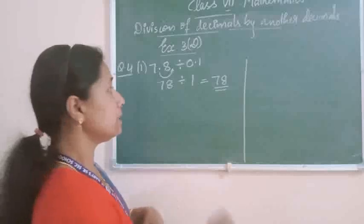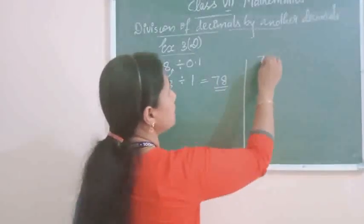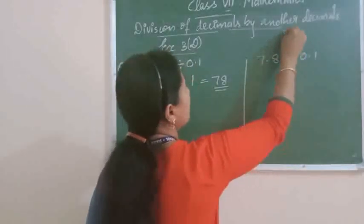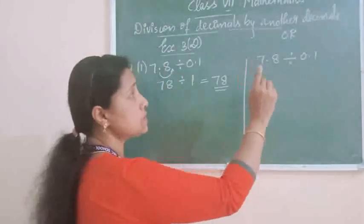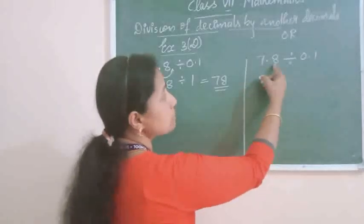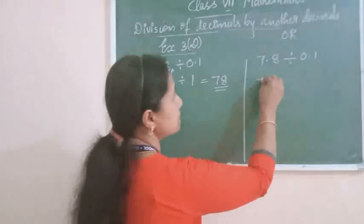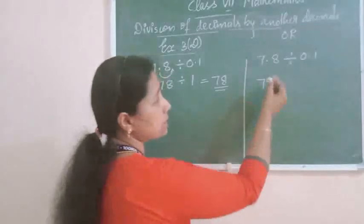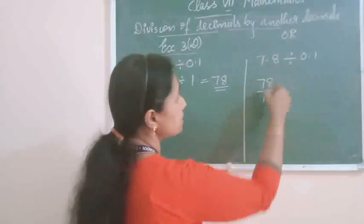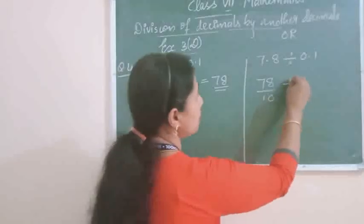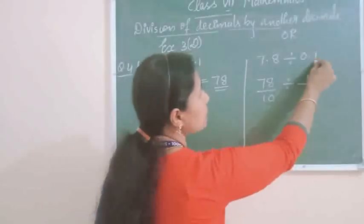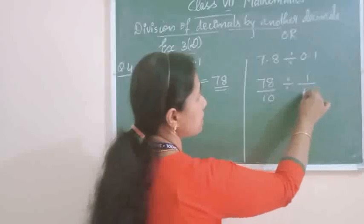One another method is also there. Listen to that method also. Here, 7.8 divided by 0.1. You can change this decimal into a fraction. For changing this into a fraction, we write the number without point. 7.8 without point is 78. Now in this number, only one digit is after the point, so you take the denominator 10. One digit — that is why denominator is 10. Then, the division symbol. And 0.1 without the point is 1 upon — here also only one digit after the point, so the denominator is 10.